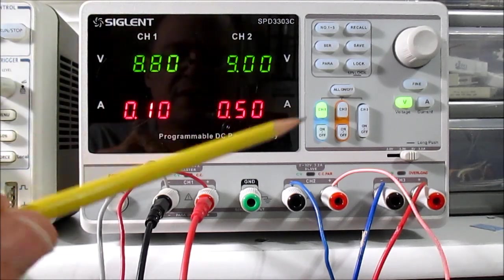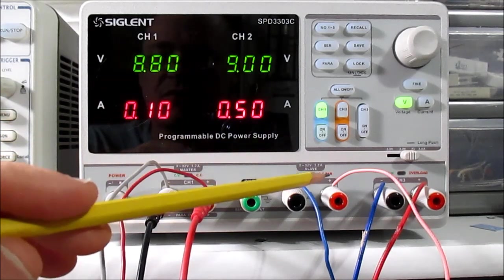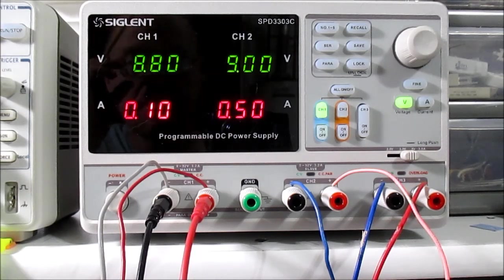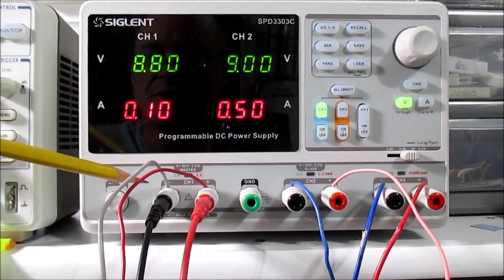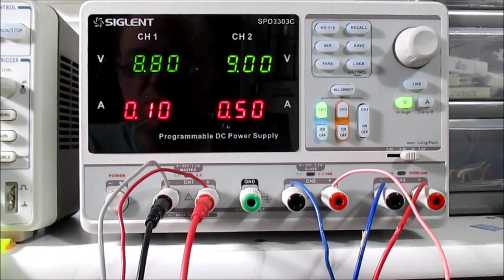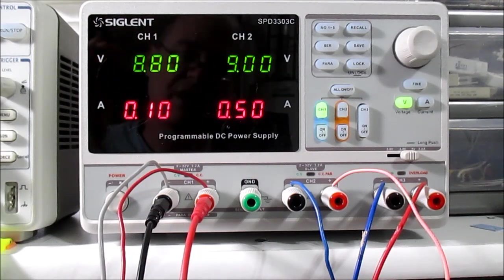The neat thing with this is you can set it to series so you can get 64 volts out at 3.2 amps. Or you can parallel it so you can get 0 to 32 volts out at up to 6.4 amps. And we'll check that out.